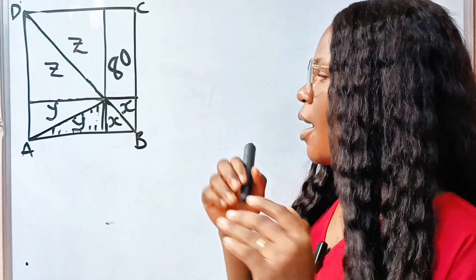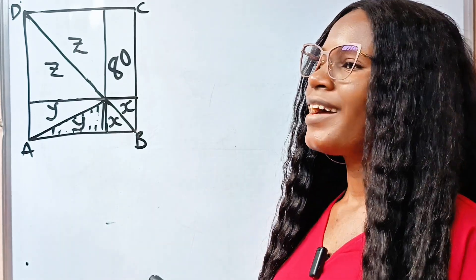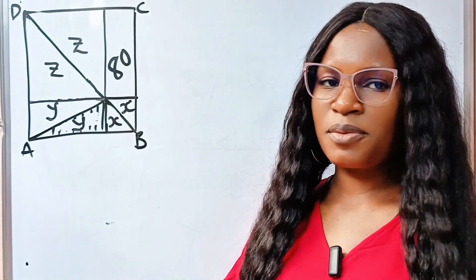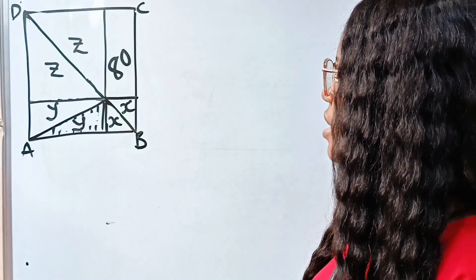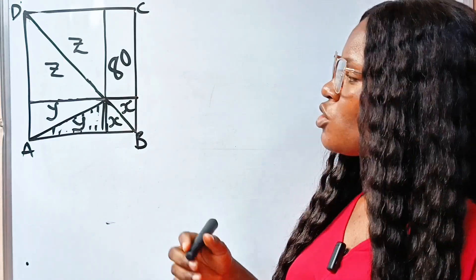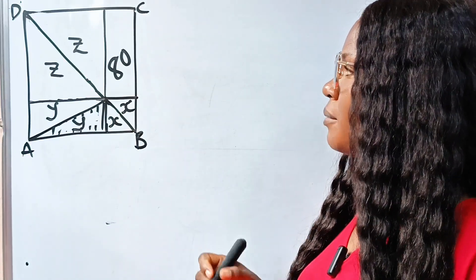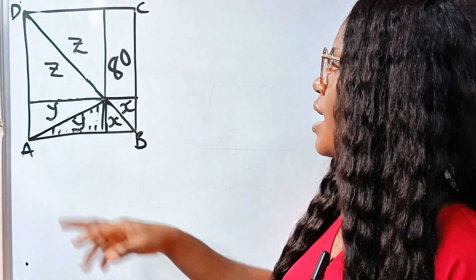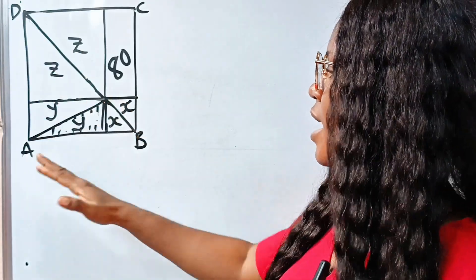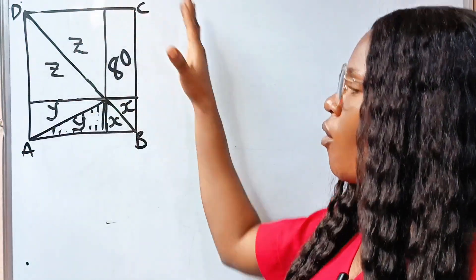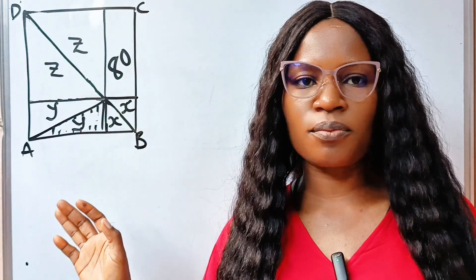Now, where am I driving at? Let's go straight to the point. I want you to note that DB is the diagonal of this rectangle.